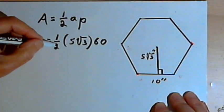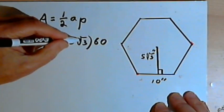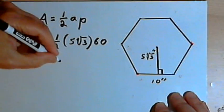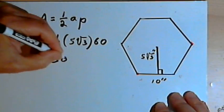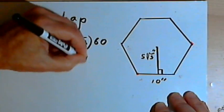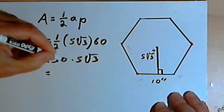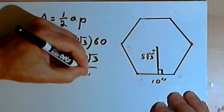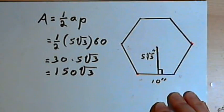So I've got one-half times 5 times the square root of 3 times 60. I'll multiply one-half times 60 first and get 30. That'll be 30 times 5 times the square root of 3. I can multiply 30 times 5 and get 150. So that's going to be 150 times the square root of 3.